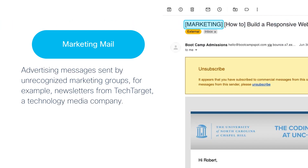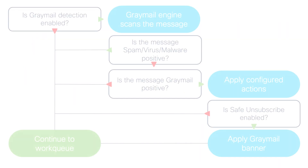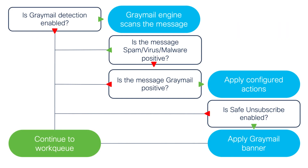These can be newsletters, mailing list subscriptions, notifications, and more. With Graymail Detection, you can identify next-level metadata associated with these messages, and configure conditions and actions to address them.